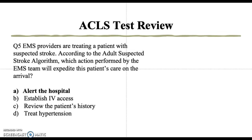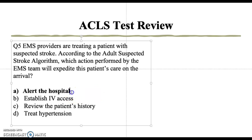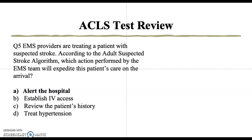Question 5: EMS providers are treating a patient with suspected stroke. According to the adult suspected stroke algorithm, which action performed by the EMS team will expedite patient care on arrival? A) alert the hospital, B) establish IV access, C) review the patient's history, D) treat hypertension. The correct answer is A — alert the hospital — so they can triage the patient accordingly based on acuity.